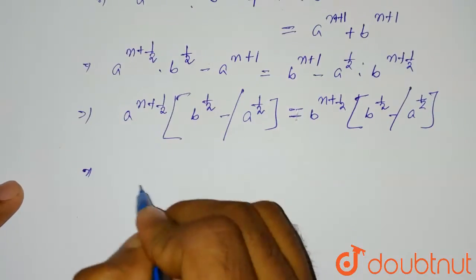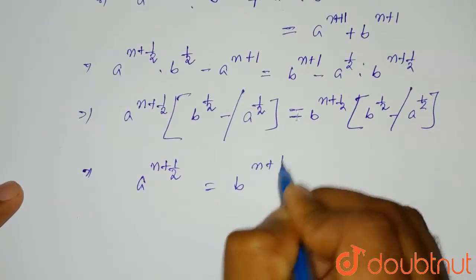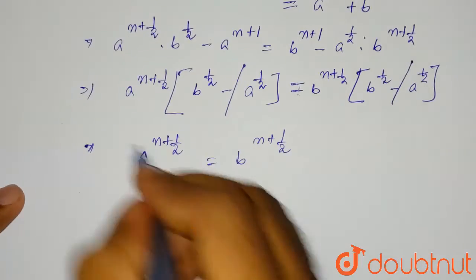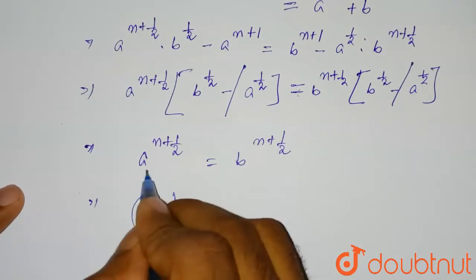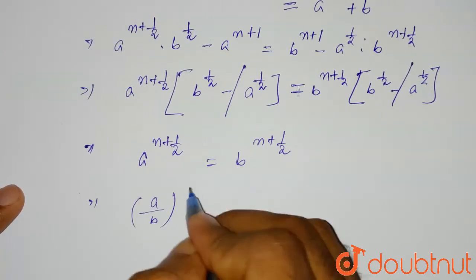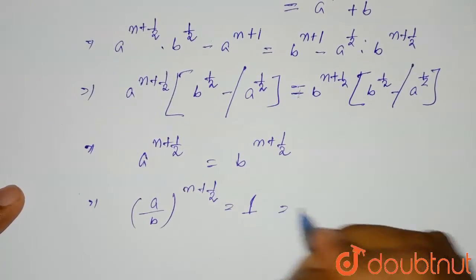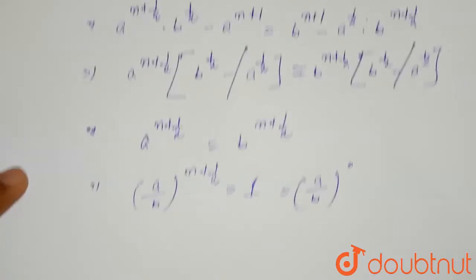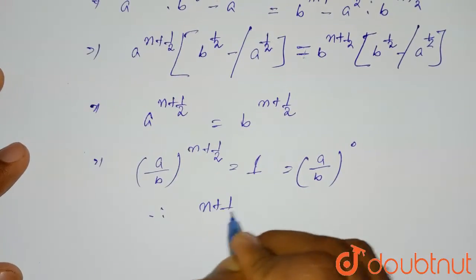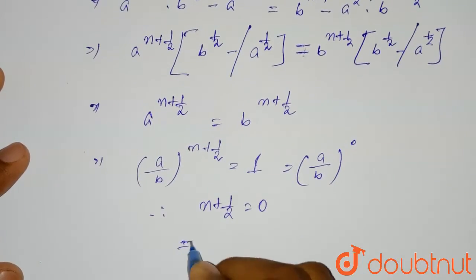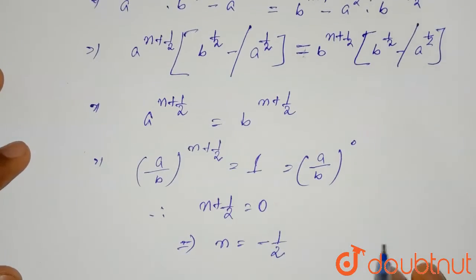From here we can see that a^(n+1/2) = b^(n+1/2). Rewriting, (a/b)^(n+1/2) = 1, and 1 can be written as (a/b)^0. Comparing exponents: n + 1/2 = 0, therefore n = −1/2.